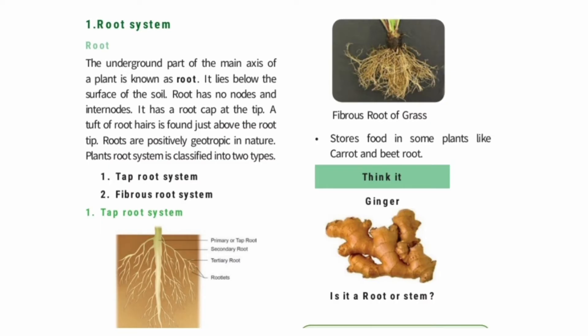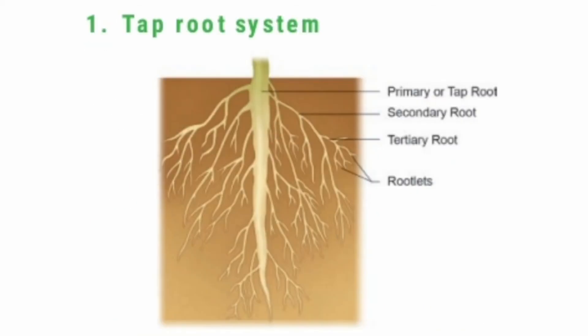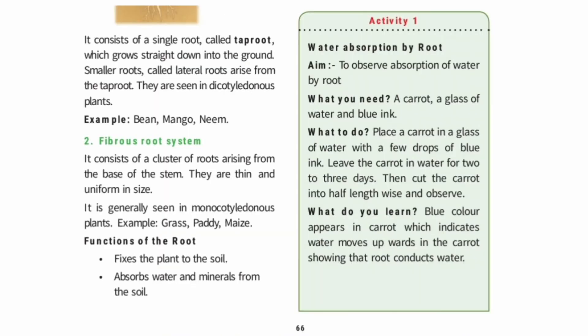Roots are classified into two types: tap root system and fibrous root system. In the tap root system, the main root in the middle is called the tap root, and the smaller side roots are called lateral roots. Tap roots are seen in dicotyledonous plants — dicotyledons are plants whose seeds have two seed leaves. Examples include bean, mango, and neem.